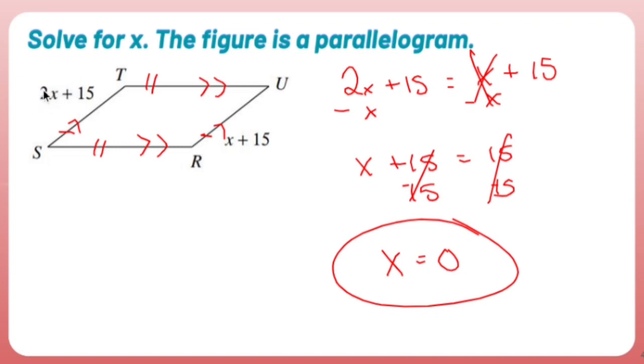If I were to replace x with zero, you disappear, and if I were to replace x with zero, you disappear, and you both end up being 15.